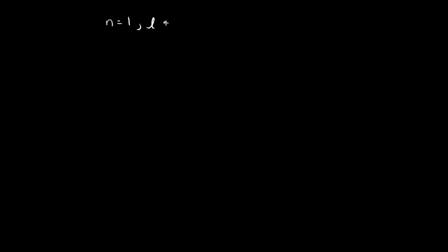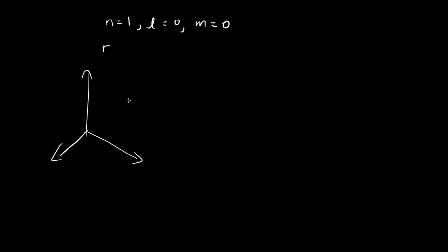In this problem, we're going to be dealing with the ground state, which corresponds to the case where n is equal to 1, l is equal to 0, and m is equal to 0. We want to look for the most probable value of r. If you have your 3D coordinates and then you detect the position of your particle, it's going to have a certain distance r from the origin. So what we want to find is the most probable distance that you're going to get when you detect the position of the particle.